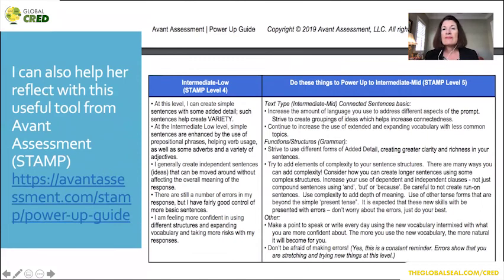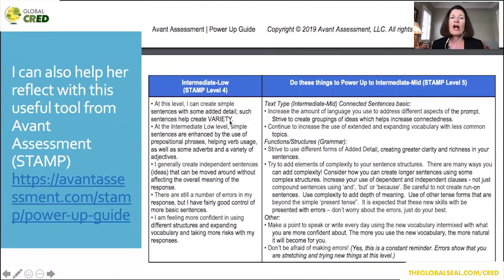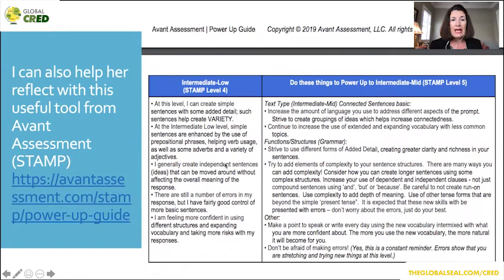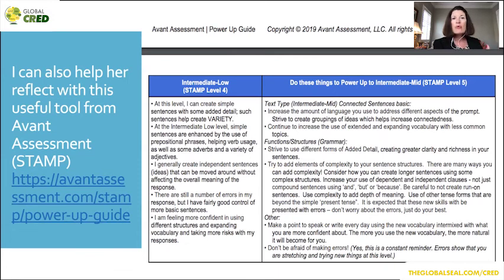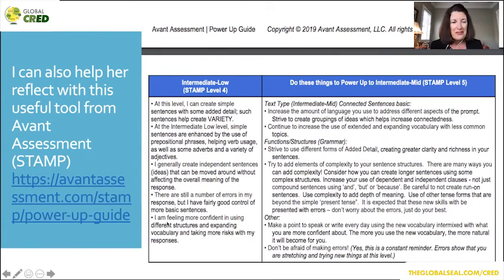Something else: we give the STAMP test every year. The year before, Avant came up with these level-up help Power Up Guides, which are on the Avant Assessment website. For an intermediate low student, it tells what they can do. Then it says: do these things to power up to intermediate — get a 5 on the STAMP. It talks about connected sentences, grammar, how to practice vocabulary, not to be afraid of errors, and all of that. I use these with my students for many of their tasks — have a task feedback next to them, they reread whatever they wrote, and then they write some plans for themselves. I found it very useful.